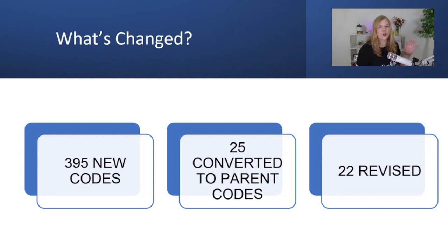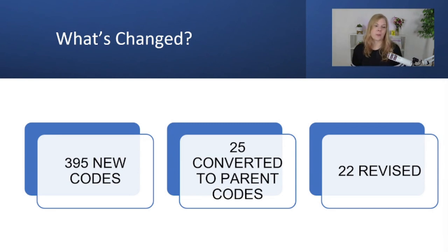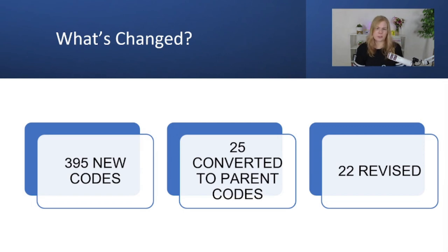Compared to last year, we did not see as many ICD-10-CM updates. This year we have 395 new codes, 22 were revised, and then we also had 25 that you may see reflected as deleted codes, but I say they are more accurately converted to parent codes. The codes themselves were expanded so they need additional characters — they weren't deleted out as ineffective per se, they just need an additional character now.